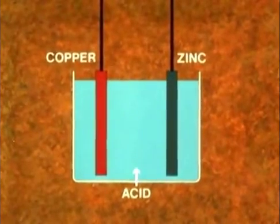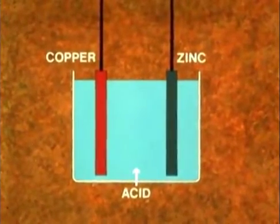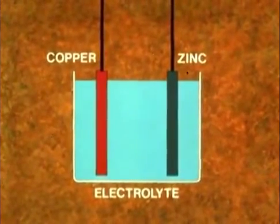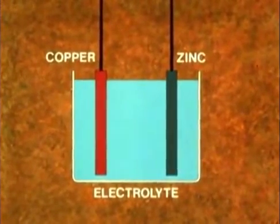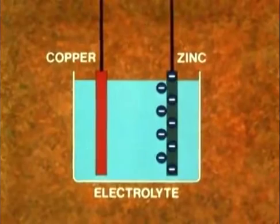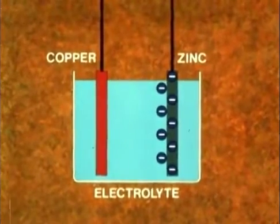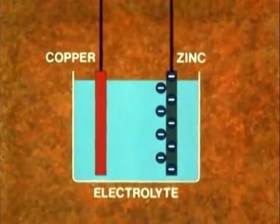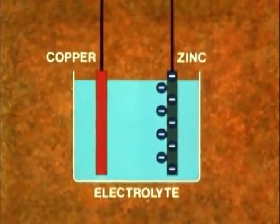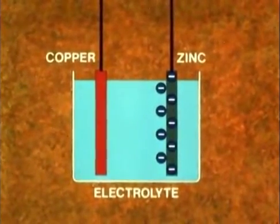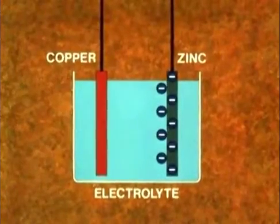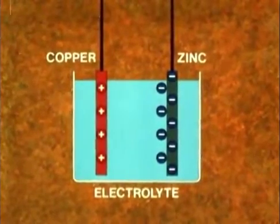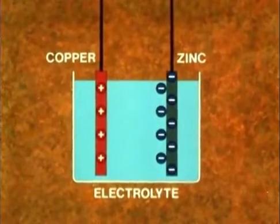What happens in the cell is this. The acid, called the electrolyte, reacts with the plates. And in the process, it pulls electrons out of the copper atoms, transfers them across the cell to the zinc plate, and deposits them there. So by losing electrons, the copper plate becomes positively charged. And by gaining electrons, the zinc plate becomes negatively charged.